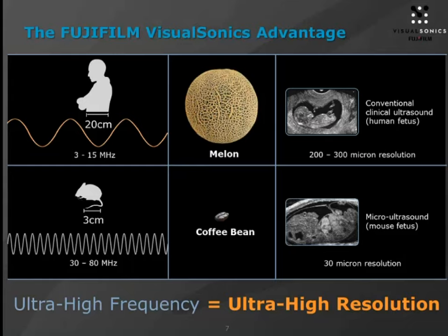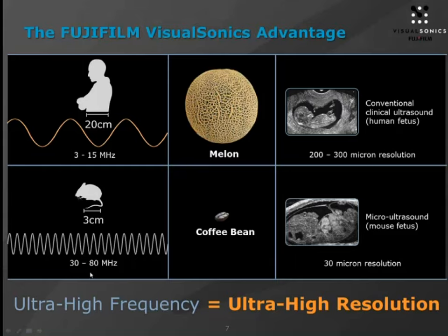Just to get everybody up to speed, I wanted to show this slide which describes the major differences between the Fujifilm Visual Sonics implementation of ultra-high frequency ultrasound versus the clinical implementation. Clinical ultrasound is typically in the range of 3 to 15 megahertz with lots of depth of penetration able to non-invasively image major areas of the human body. Our implementation starts at 15 megahertz and goes all the way up to the 80 megahertz range, giving us extremely high resolution at the sacrifice of depth of penetration — a great application for small animal imaging. You can see comparative grayscale images of a mouse fetus versus a human fetus.